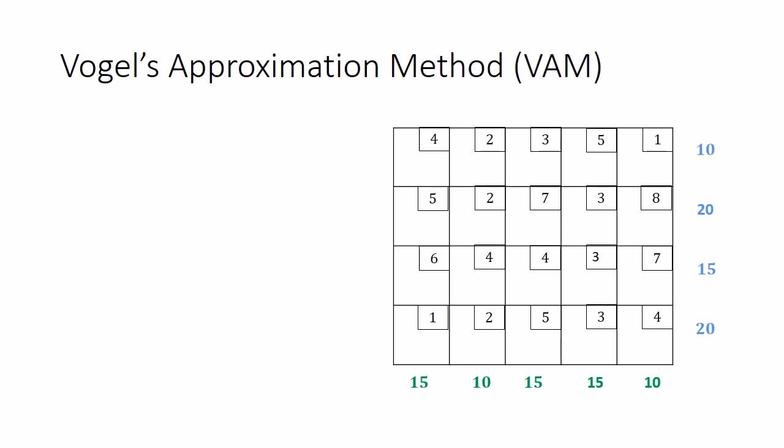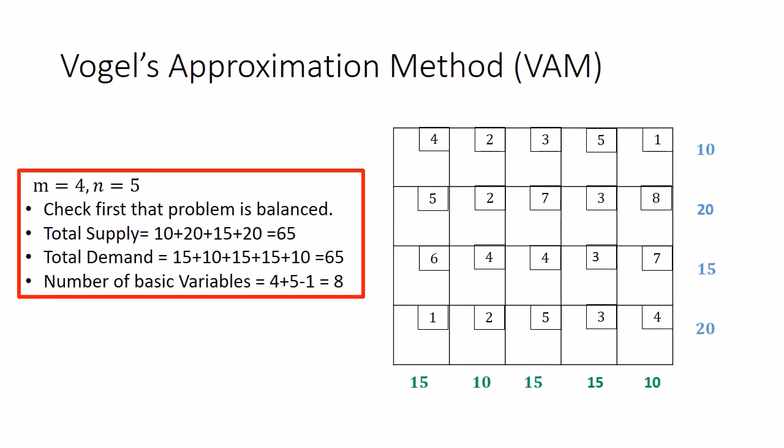Here I have taken the same example which has already been solved using the Northwest Corner Rule and the Least Cost Method in our previous videos. We first make sure the problem is balanced — the total supply should equal the total demand, which is satisfied here. The number of basic variables is m plus n minus 1, so we know we will have 8 allocations in the end.